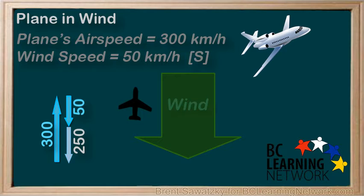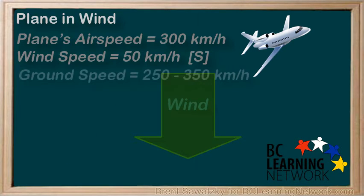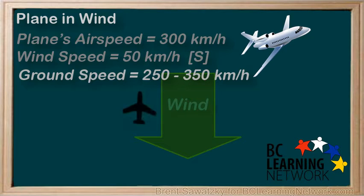So we've determined the two extremes. Depending on the direction of the plane, the resulting ground speed will vary, but will always be between 250 kilometers per hour — our minimum — and 350 kilometers per hour — our absolute maximum. The more we aim into the wind, the closer we'll be to 250 kilometers per hour. The more we aim with the wind, the closer we'll be to our 350 kilometer per hour maximum.